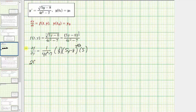Simplifying, the partial of f with respect to y equals five over three times the quantity (4t² − 7) times the quantity (5y − 8) raised to the power of positive two-thirds.